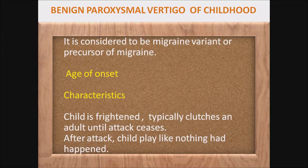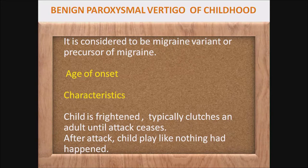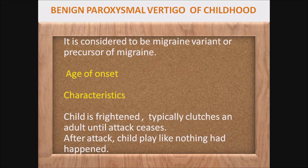Now I will talk about each disease one by one. First is benign paroxysmal vertigo of childhood (BPVOC). It is considered to be a migraine variant or precursor of migraine. Age of onset is generally around 4 years but may range from 5 to 10 years. After onset it gradually increases in frequency, then gradually decreases in severity, and usually resolves by age 10. Characteristics: sudden onset of vertigo, recurrent in nature, usually lasting a few minutes — self-limiting.